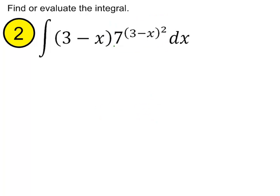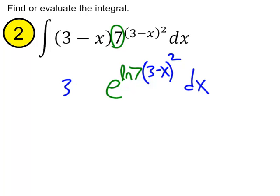And we'll rewrite this 7 as e to the ln 7. And it's being raised to the 3 minus x squared power. So, we'll just go ahead and multiply that times the ln 7, 3 minus x squared. And dx 3 minus x integral.